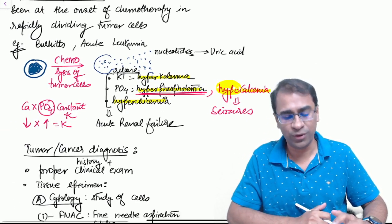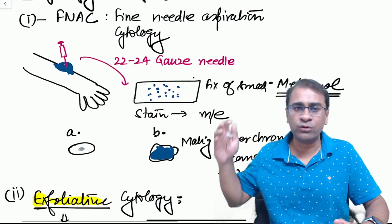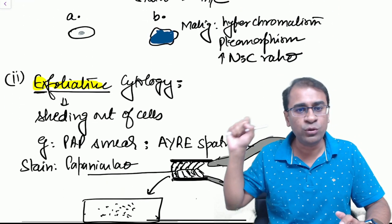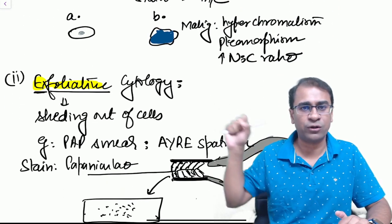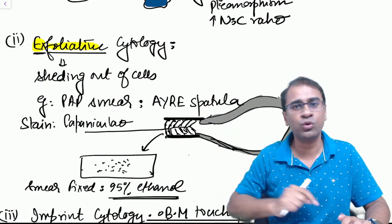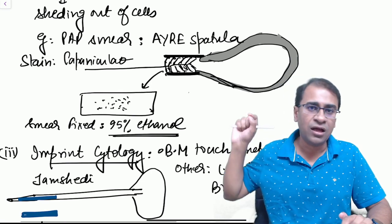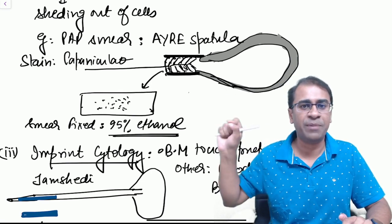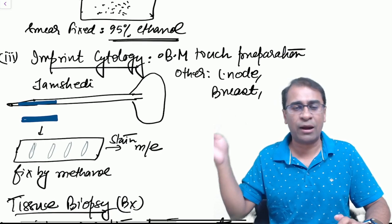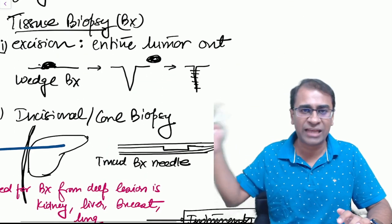For diagnosis, you can diagnose this by using a 20-24 gauge needle for FNAC. You can use a technique called exfoliative cytology in which you can do a Pap smear with the help of Ayre spatula. This is also asked as an image-based question. The fixative for this is 95% ethanol.